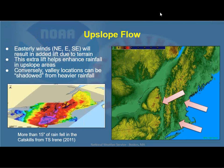Let's talk about upslope flow — a critical component for us. With winds out of the east or northeast, they bump up against this terrain and bring some added lift. As the winds come off the coastal plain of Boston and Providence, they reach the Worcester Hills and get some lift. They sink a little bit in the Connecticut Valley — sometimes what we call a shadow effect, with lower rainfall totals there. Then we get more enhancement as we get out toward the Berkshires, Litchfield Hills, the Green and White Mountains, and certainly the Adirondacks and the Catskills as well.